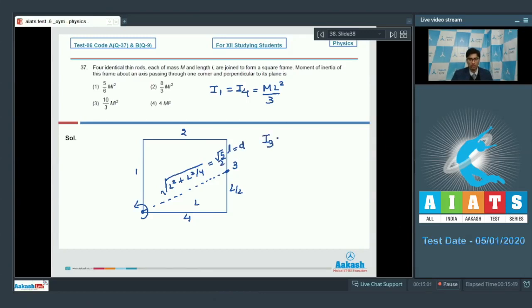The moment of inertia of third rod is equal to moment of inertia of second rod and it will be equal to ml square by 12 plus m d square. This is from the parallel axis theorem. When substituting the value of d to be equal to root 5 by 2 L, we can write down that i3 and i2 have the value 4 by 3 ml square. The net moment of inertia is i1 plus i2 plus i3 plus i4 and that is equal to 10 ml square by 3 and therefore option number 3 is the correct answer.